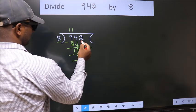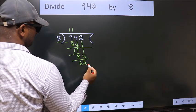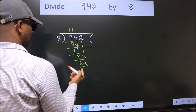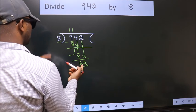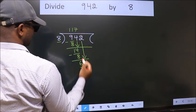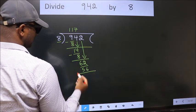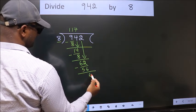After this, bring down the beside number. So 2 down. So 62. A number close to 62 in 8 table is 8 sevens 56. Now we subtract. We get 6.